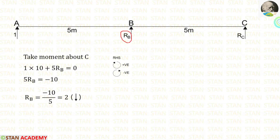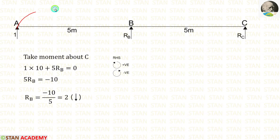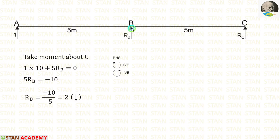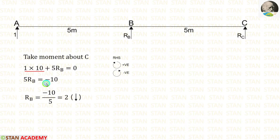To find RB, I am going to take moment about C. In this case, I am moving towards the right-hand side. Clockwise will be positive, anti-clockwise will be negative. The unit load 1 is acting towards point C in the clockwise direction, so it will be positive and the distance is 10, giving 1×10. RB is also acting towards point C in the clockwise direction, so it is also positive, with distance 5 meters giving 5RB. So 1×10 equals 10. Taking it to the right side, it becomes negative. Finally, we are getting RB equal to minus 2.